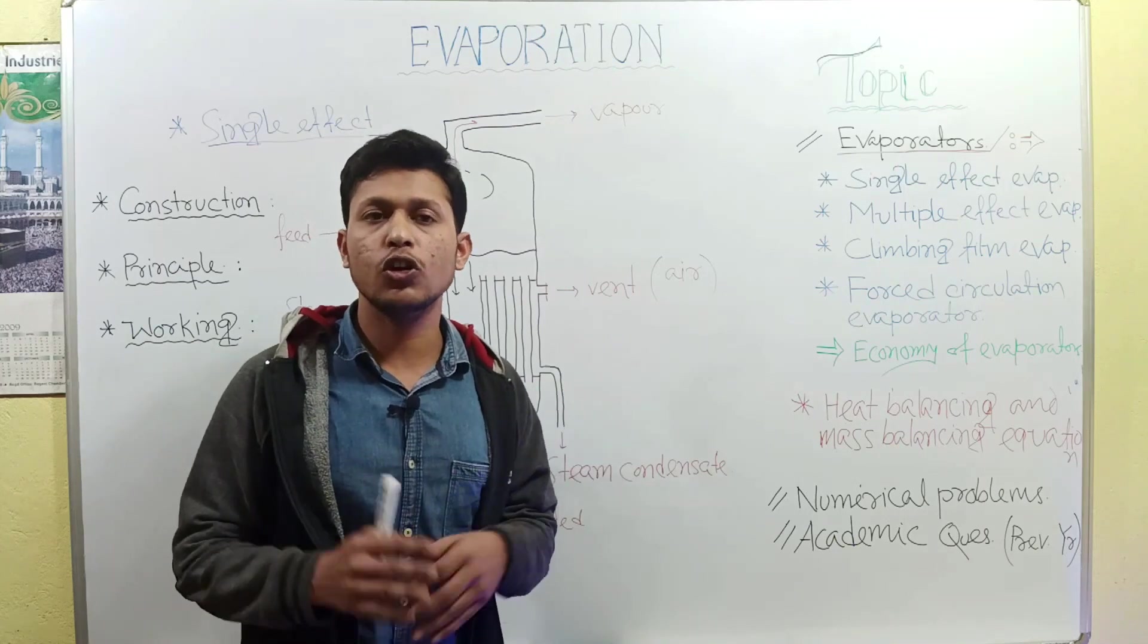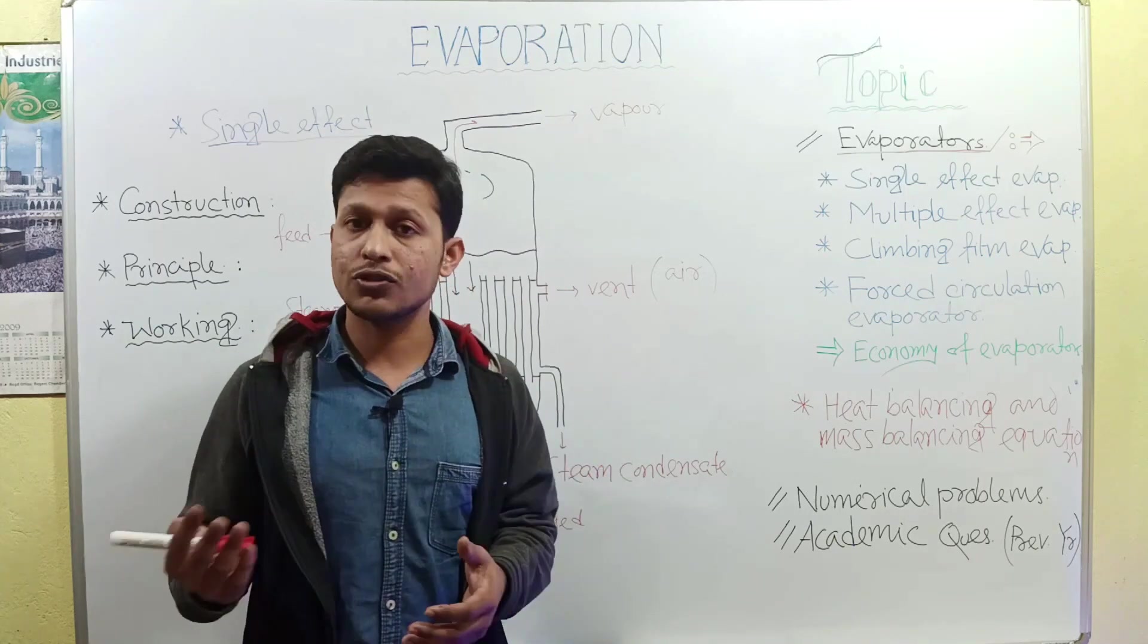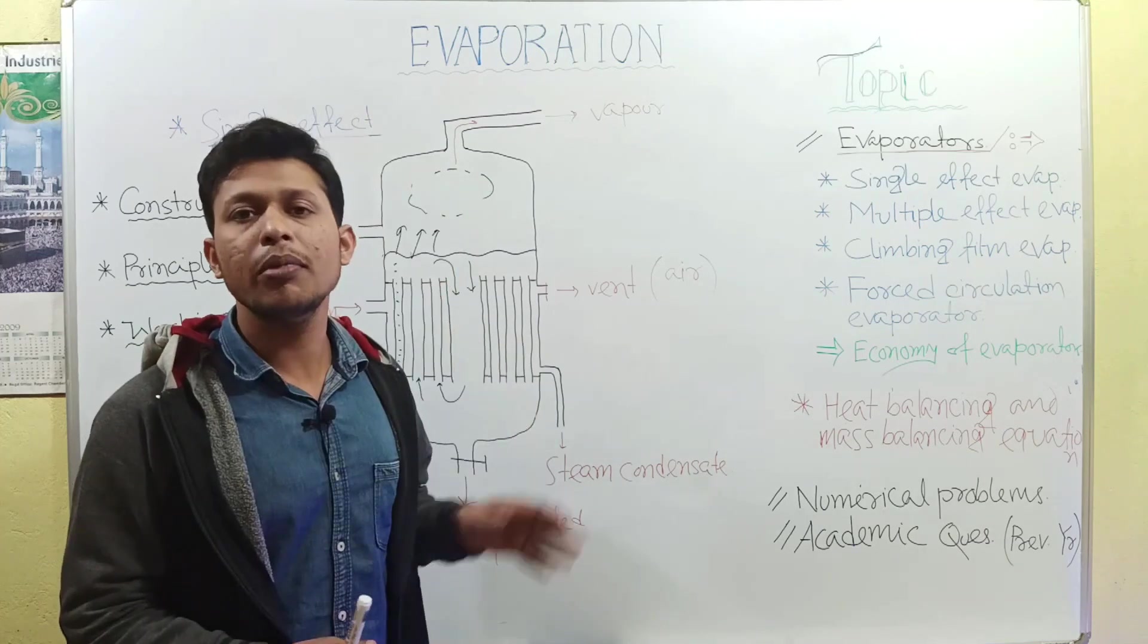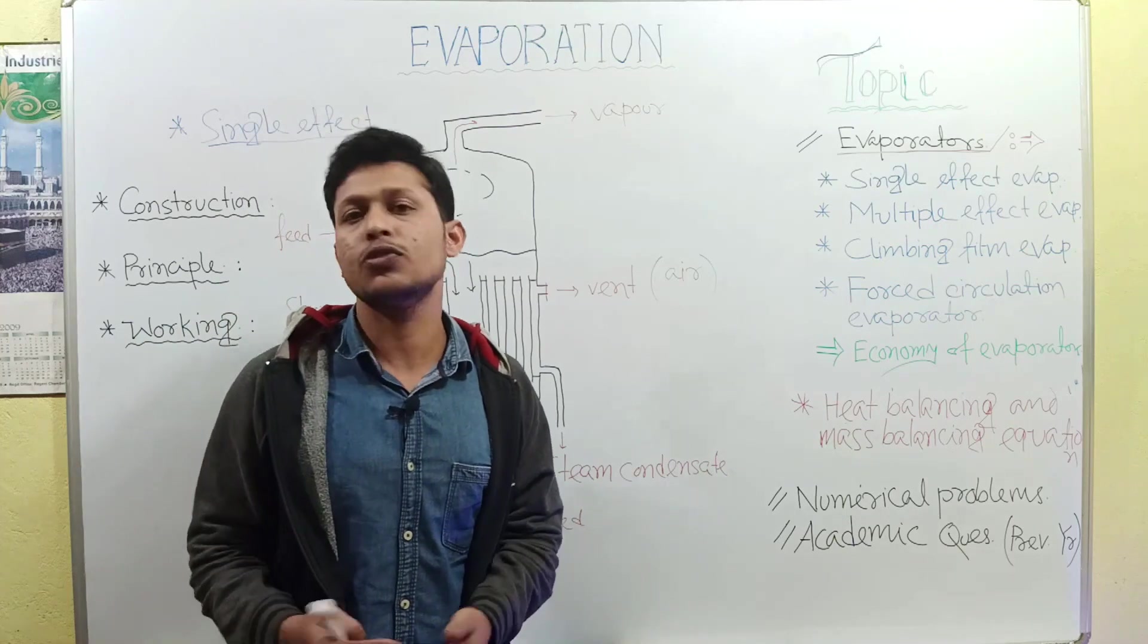This evaporator is used for the manufacturing of sugar, salt, and caustic soda. In case of sugar, you have to concentrate a product, and this type of product is formed by this evaporator.